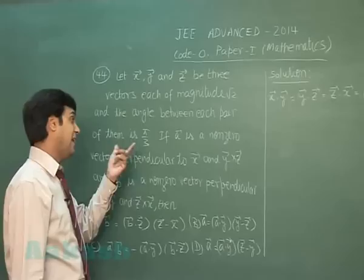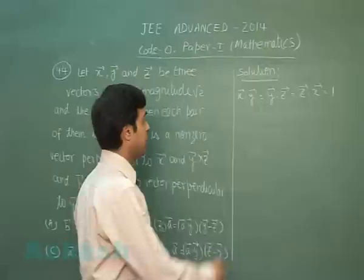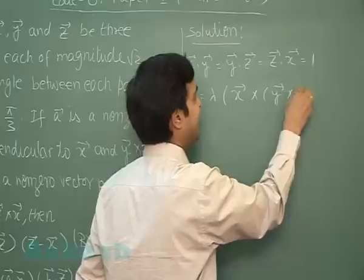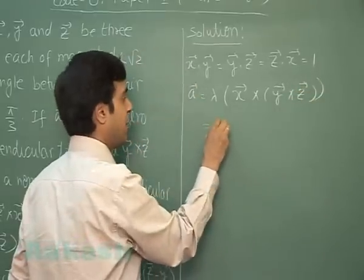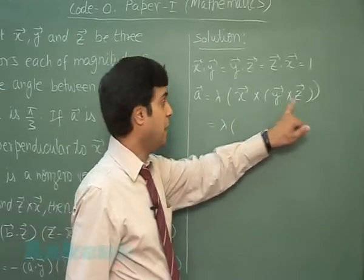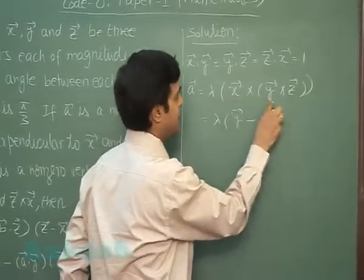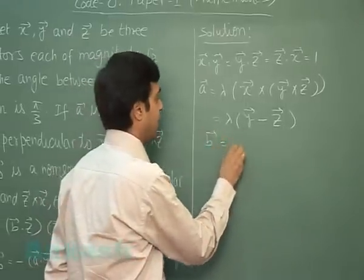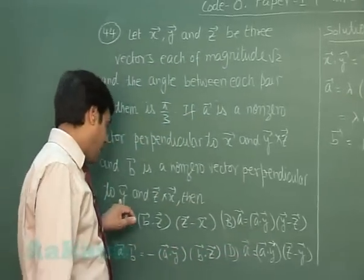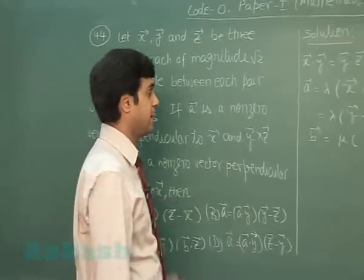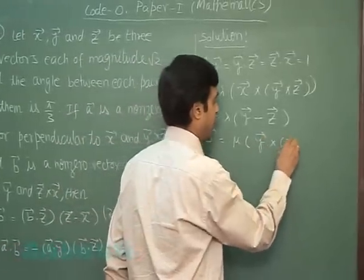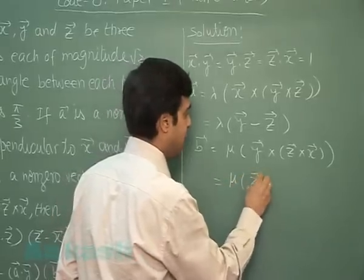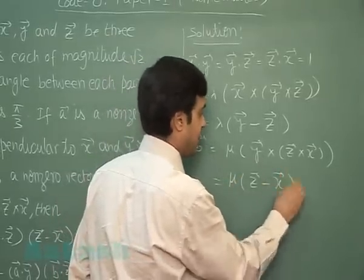Now, for options, we require to find b·z, a·y, these terms. Before moving to this part, we need to find a vector and b vector. So let's find out a vector. It is perpendicular to x and y × z. Applying vector triple product, x·z·y - x·y·z, that is 1 into y vector minus x·y, that is 1 into z vector. Similarly, b vector is μ times another one given to me perpendicular to y and z × x. So this is equal to μ times (z - x). Clear?